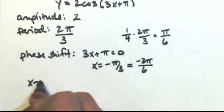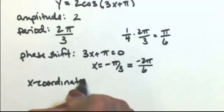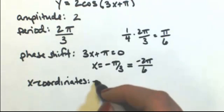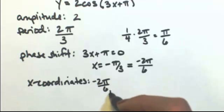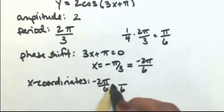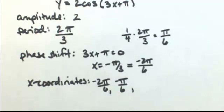So then my x-coordinates will be found by adding pi over 6 each time. So let me start from negative 2 pi over 6 and just add a pi to the top because the bottom will stay a 6. So the next one will be negative pi over 6.